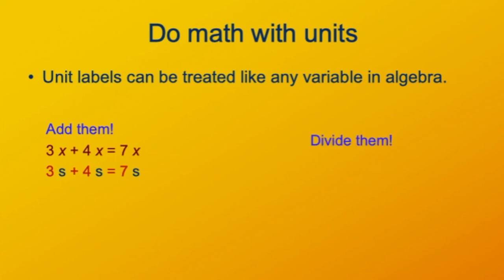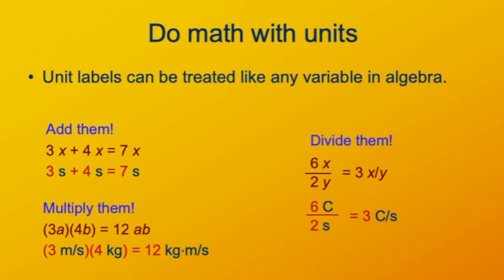You can also divide terms with units, and they don't even need to be in the same units. So, just as 6x divided by 2y gives you 3x over y, you can say 6 coulombs divided by 2 seconds is 3 coulombs per second. If you can divide, well, of course you can multiply. 3a times 4b is 12ab. So, 3 meters per second times 4 kilograms is going to give you 12 kilogram meters per second.